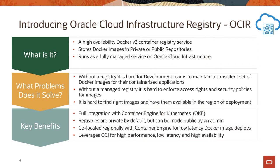It's also difficult to have the right set of images available in the same region of deployment as your application. One of the key benefits of OCIR is that it is fully integrated with the Container Engine for Kubernetes — our Kubernetes service running on OCI. The registries are private by default, but you can also make them public if you have the rights to do so. It's also co-located regionally, so if you're running workloads on OKE, the OCIR registry service is co-located in the same region.